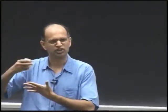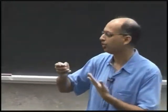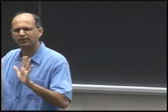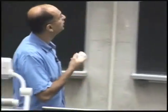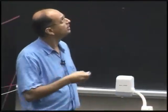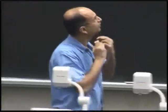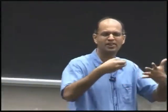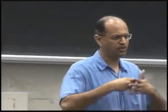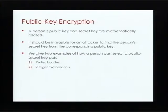This is how we engage in secure web communications today on the internet. The main ingredient I want to describe is how Alice can select two keys — a public key and a secret key which are mathematically related — in such a way that if she makes her public key public, no one else can actually find the private key. It should be infeasible for any attacker to find Alice's secret key from her public key. I'll show you this idea with two concepts: that of perfect codes and integer factorization.